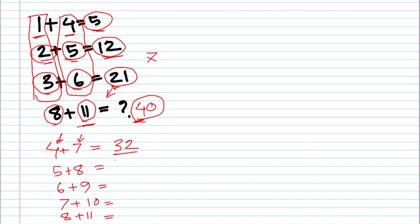Then 32 plus 5 is 37, 37 plus 8 is 45. 45 plus 6 is equal to 51, plus 9 is equal to 60. 60 plus 7 plus 10 is equal to 77. 77 plus 11 is equal to 88, plus 8 is equal to 96. So the result is 96.